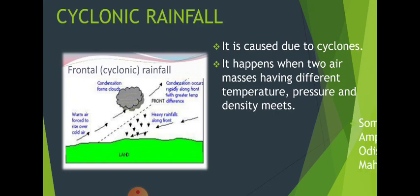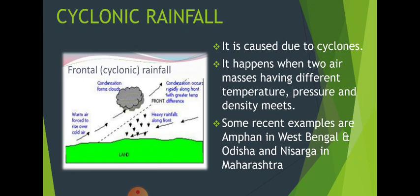Some recent examples from our country this year include Cyclone Amphan, which caused rain and a lot of damage in West Bengal and Odisha. Similarly, Cyclone Nisarga hit Maharashtra and the Gujarat coast. Cyclonic depressions generate from time to time, and our eastern and western coasts receive cyclonic rainfall.